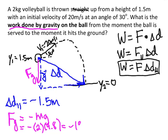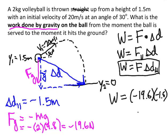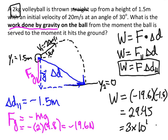The force of gravity I can calculate fairly easily — that's going to be negative mg. The mass is 2 kilograms and g is 9.8, so the force of gravity is negative 19.6 newtons. The work done will be that whole force of gravity, negative 19.6, times the component of delta D that's parallel, which is negative 1.5. So we get 29.4 joules, and rounding to significant figures — essentially only one sig fig here — that's 3 × 10¹ joules of work done.